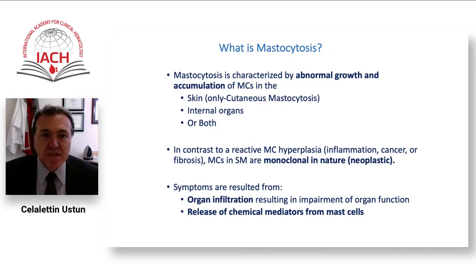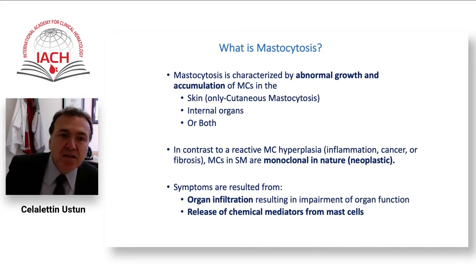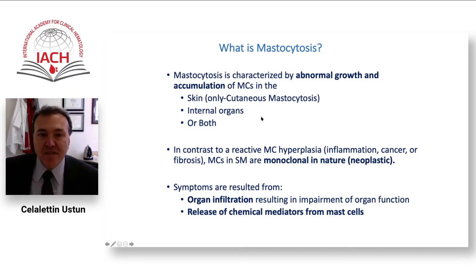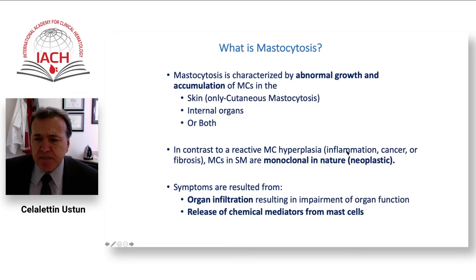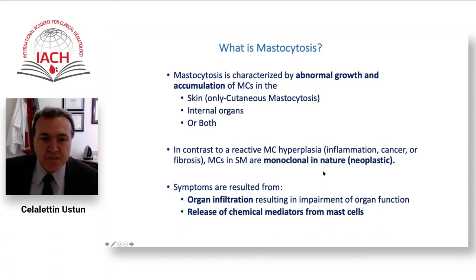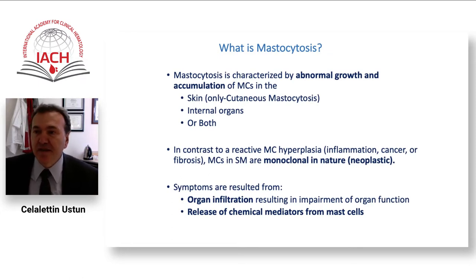What is mastocytosis? It is characterized by abnormal growth and accumulation of mast cells. These mast cells are not reactive or normal; they must be neoplastic and monoclonal in nature. The symptoms and signs of mastocytosis arise two ways: one is release of chemical mediators, and the other is organ infiltration and fibrosis, leading to organ dysfunction and failure.